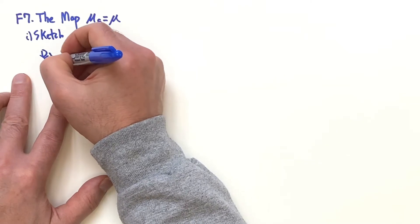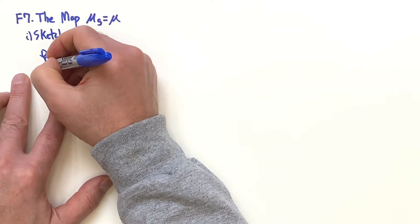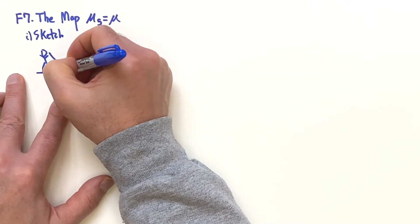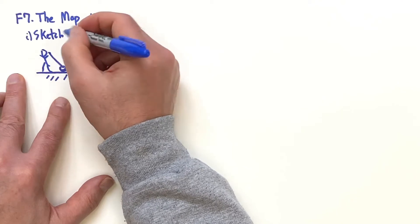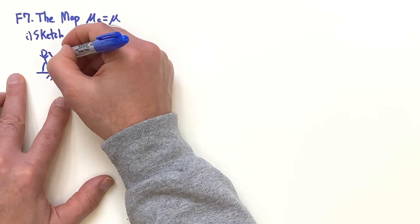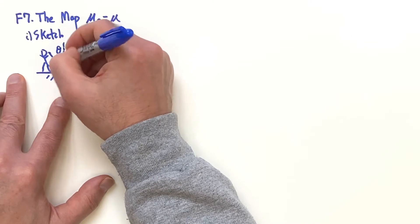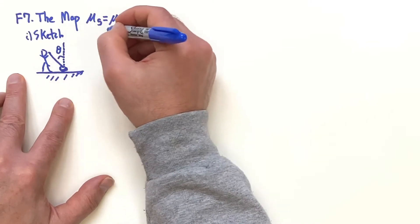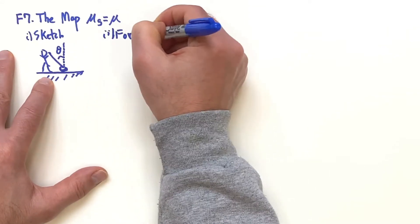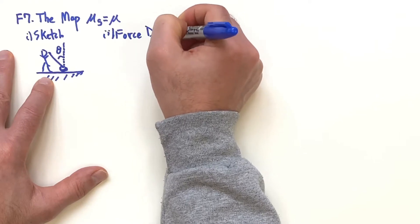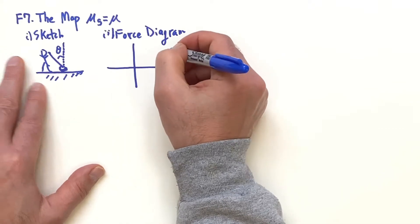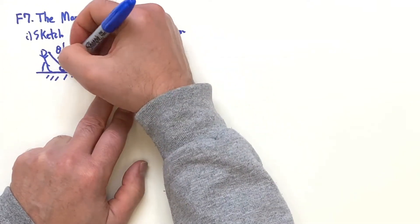For the sketch, we have a person, a mop on the floor like that. And we'll go ahead and define the angle to be relative to the vertical. Next we give a force diagram.